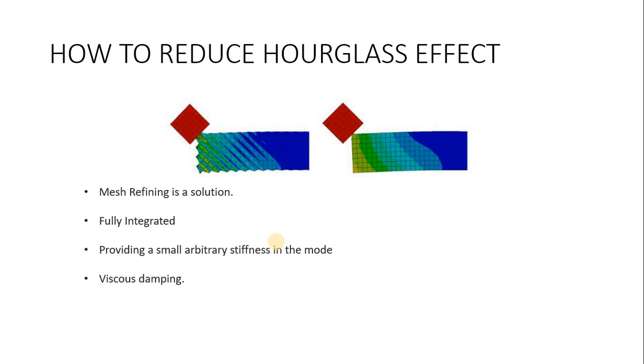The third way to reduce the hourglass effect is providing a small arbitrary stiffness in the mode in which hourglass deforms. This is only from an FEA point of view, and in actual physical systems there is no stiffness. This is what is called built-in hourglass controls. The last one is viscous damping.